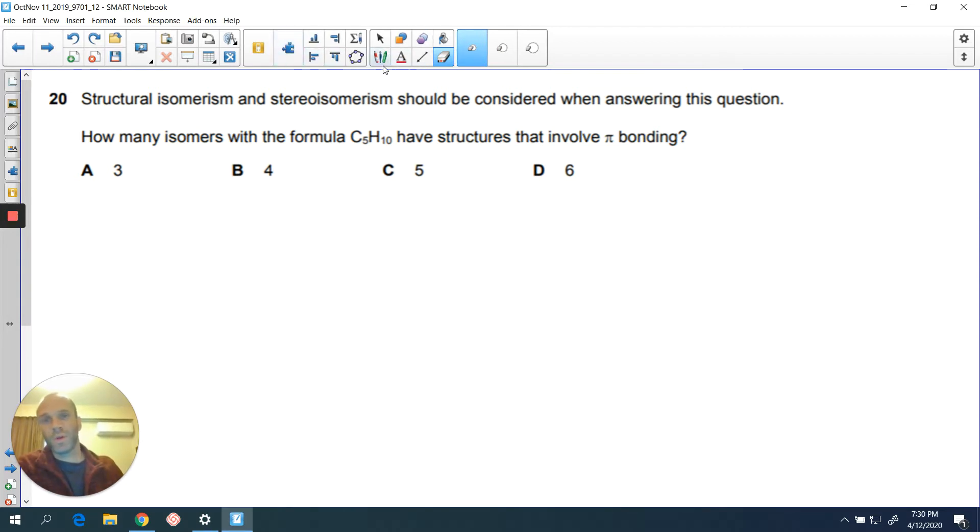First we've got to get to grips with what the question is really asking. Now it's mentioning pi bonding here and that's giving you a very important bit of information because it basically means if you're talking about something that involves pi bonding, you're talking about something that involves a double or triple bond. Remembering your pi bond is your second or subsequent bonds.